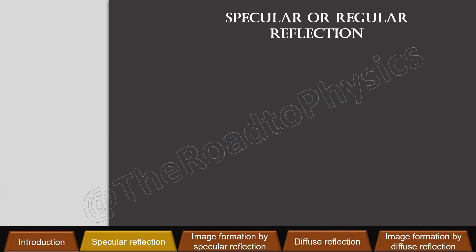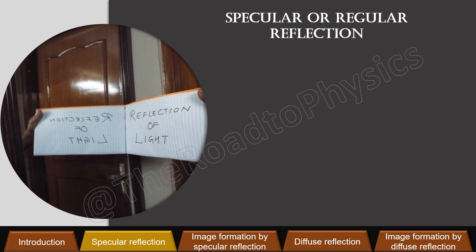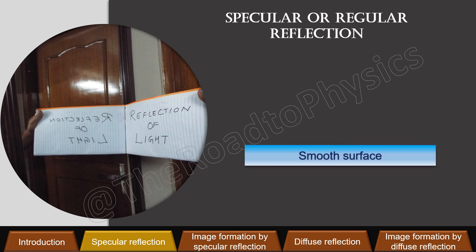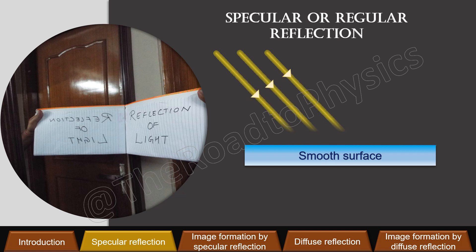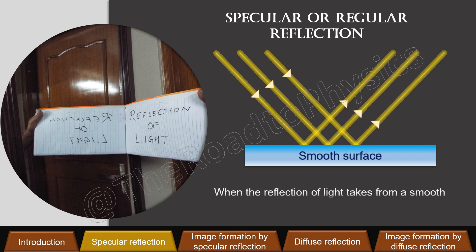The best example to understand specular reflection is a mirror. What a fascinating thing it is — it forms such perfect images. The reason lies in the smoothness of its surface. If a parallel beam of light falls on a smooth surface, the reflected light is also a parallel beam of light. When reflection of light takes place from a smooth surface, it is known as regular or specular reflection. It results in the formation of clear and sharp images.